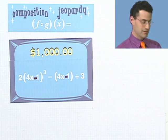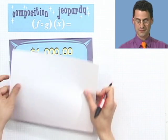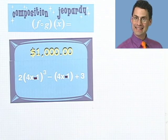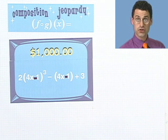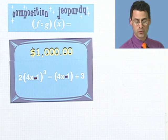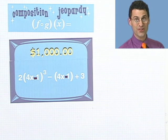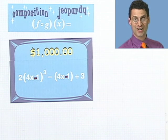Let's start again. For $1,000, the answer is 2 times the quantity 4x minus 1, all cubed minus the quantity 4x minus 1 plus 3. Good luck.